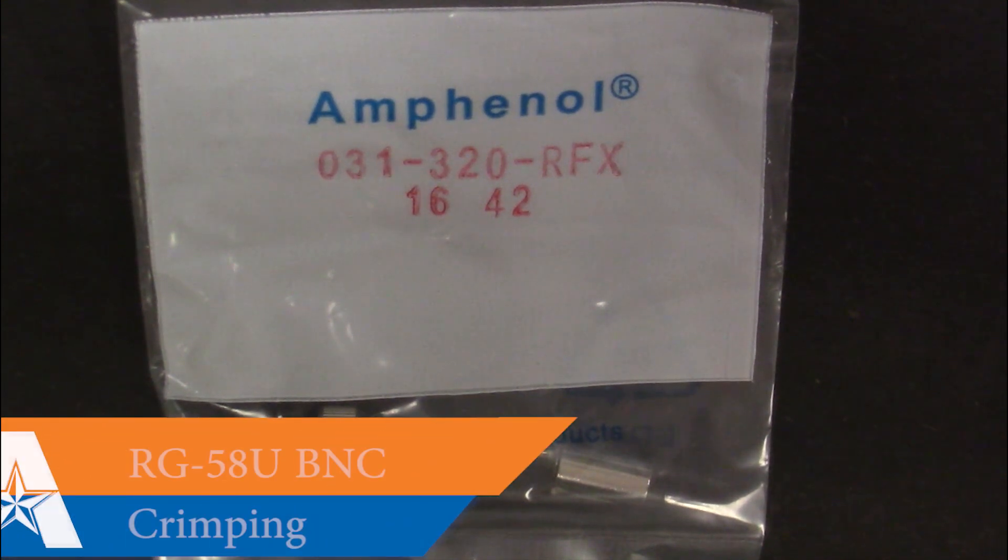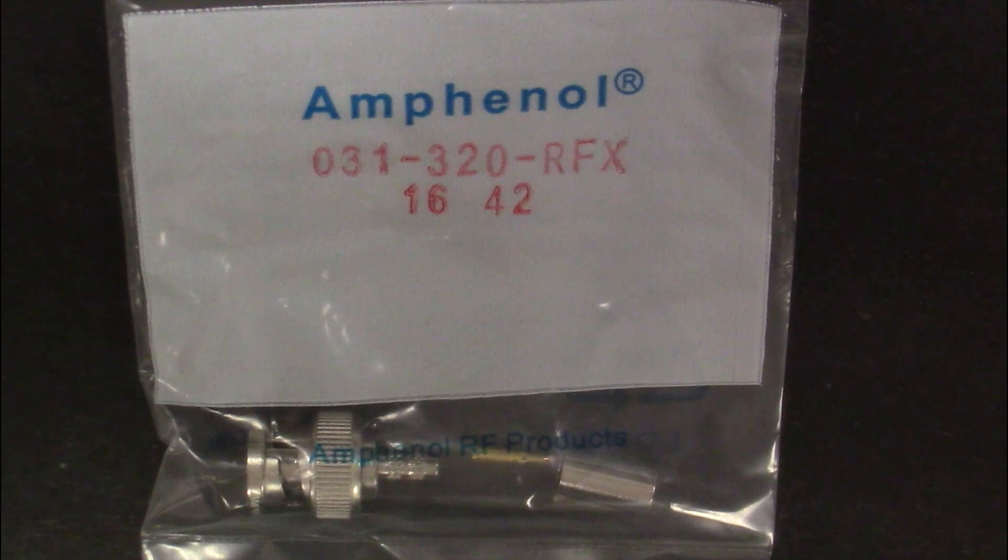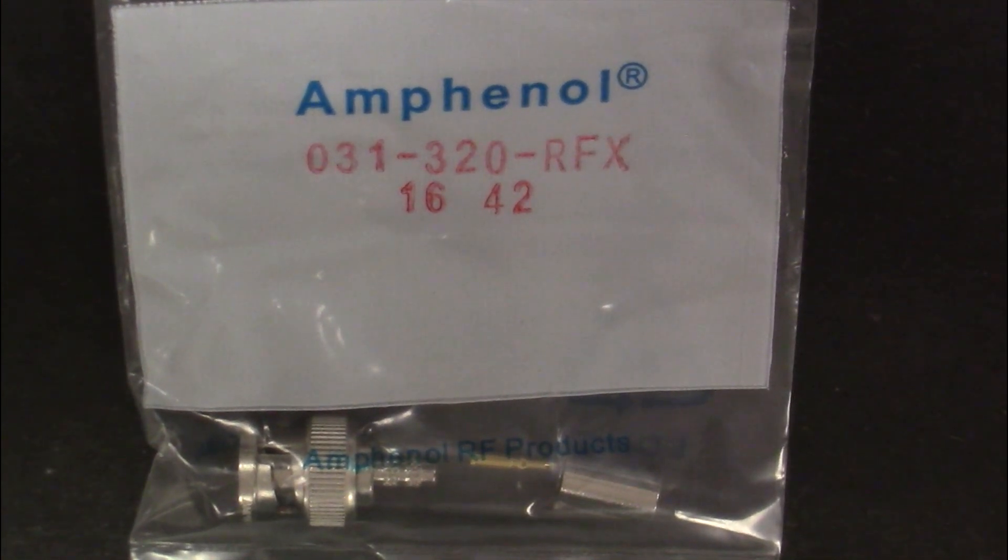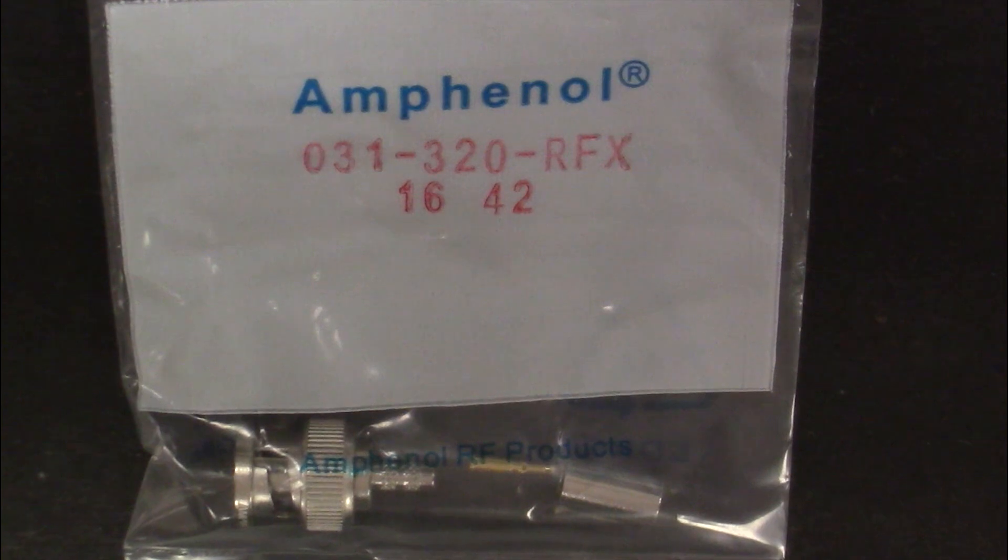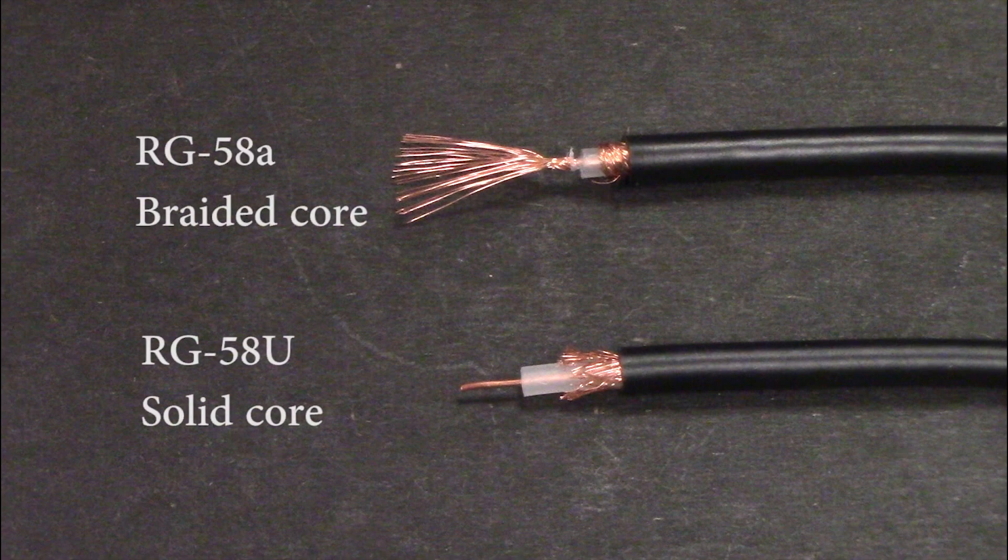This video will show you how to properly install the 31-320-RFX BNC RF connector to a 50-ohm RG-58U cable. The package should contain an outer ferrule, MEL contact, and plug body. The spec sheet says to use RG-58A,